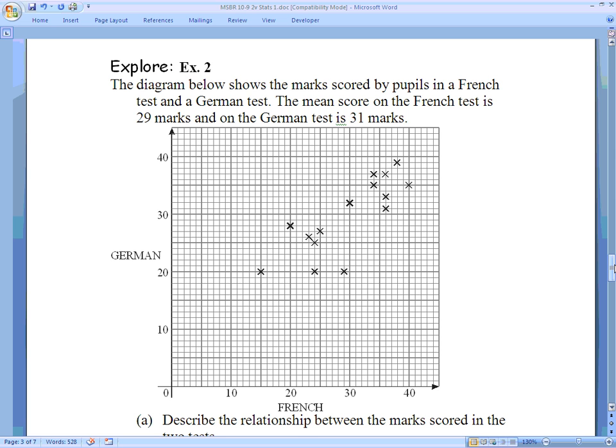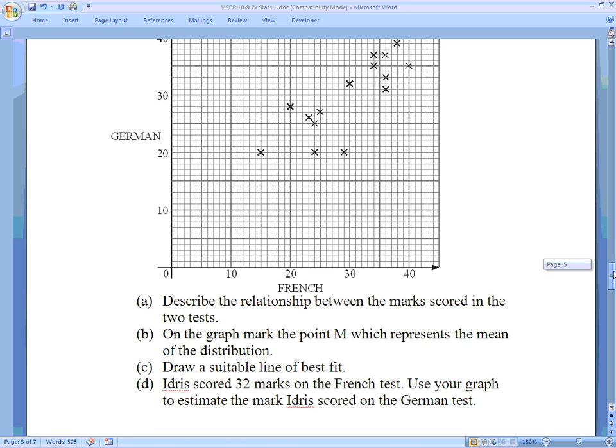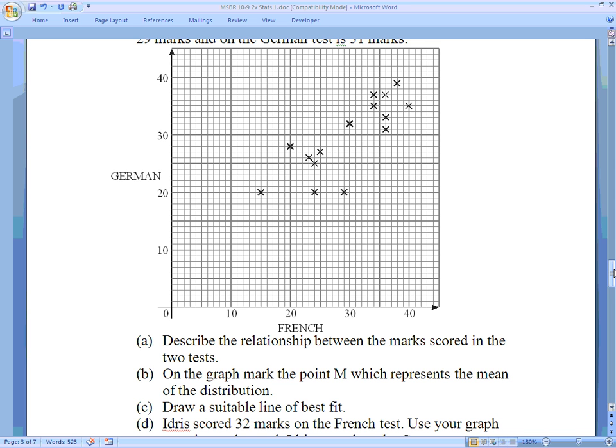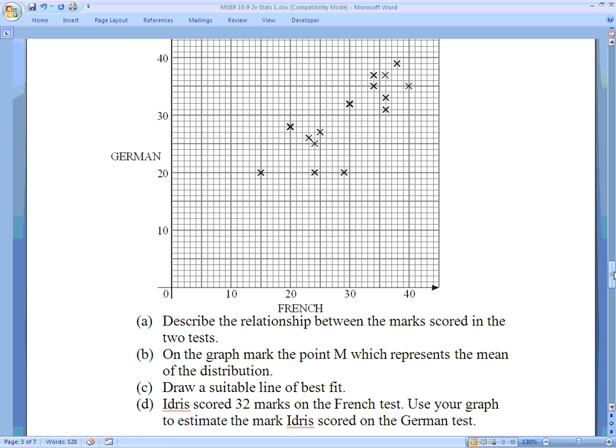The diagram below shows marks scored by pupils in a French test and a German test. The mean score of the French test is 29 marks. And then, the German test is 31 marks. 29 on French and 31 on German. I'm going to write that down. 29 French and that was the X. And the German was 31. Describe the relationship between the marks scored on the two tests.